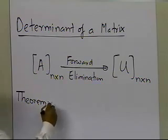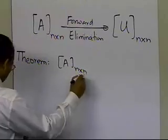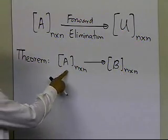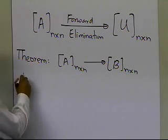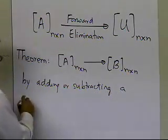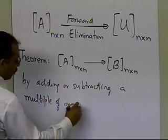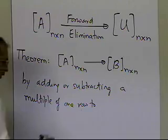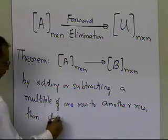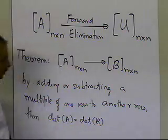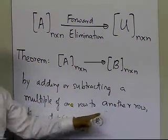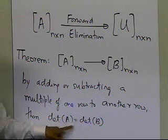Theorem one states: if you have A, which is an n-by-n matrix, and you obtain a matrix B, also n-by-n, by adding or subtracting a multiple of one row to another row — not to itself, but to another row — then the determinant of A is the same as the determinant of B. So the determinant of the matrix does not change under this row operation.